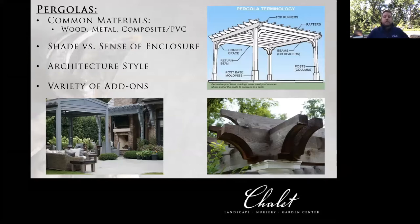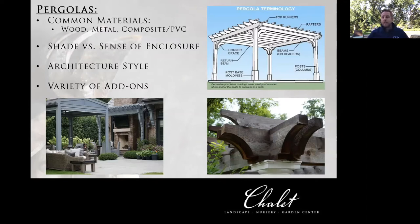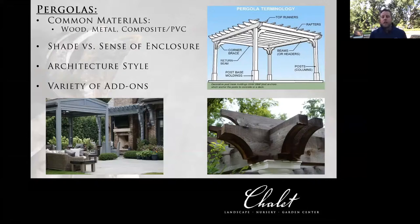Starting off with pergolas — many of you know what a pergola is, but what a lot of people don't know is the terminology. Some of these terms go by different names depending on who you're talking to. In general, you have the posts as the main support structure, then the beams going laterally across to connect the posts, then on top of that. When you're talking about a pergola, you have these layers, and depending on the style, construction method, and material, those layers can go a long way to add elements of design.